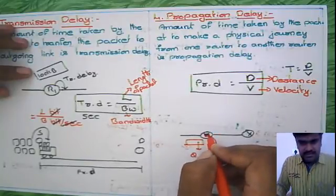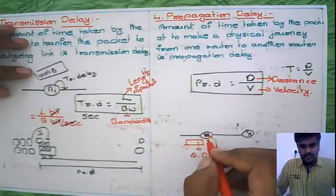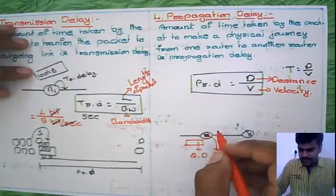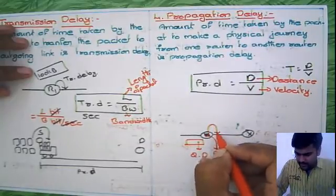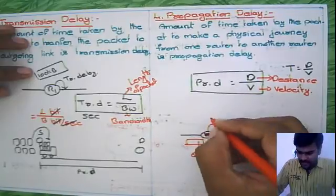After the packet is processed, meaning the route is decided, we have to put the data into the outgoing link. How much time it is taking to put that data, that we are taking as a transmission delay.